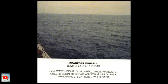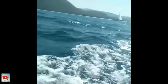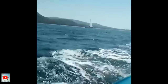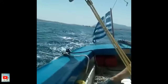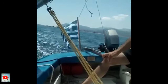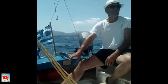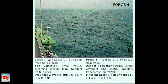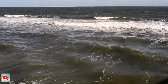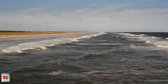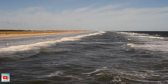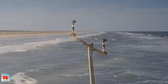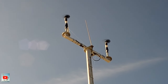Beaufort Force 3: wind speed 7 to 10 knots, sea wave height 0.1 to 1 meter or 2 to 3 feet — large wavelengths, crests begin to break, glassy appearance, scattered white caps. Beaufort Force 4: wind speed 11 to 16 knots — moderate breeze, small waves becoming longer, fairly frequent white horses, wave height 1 to 1.5 meters or 3.5 to 5 feet.